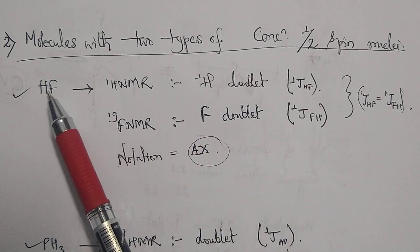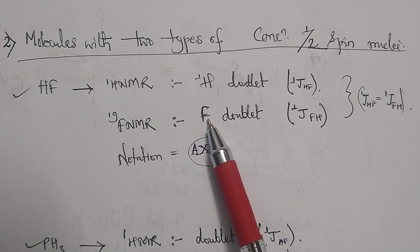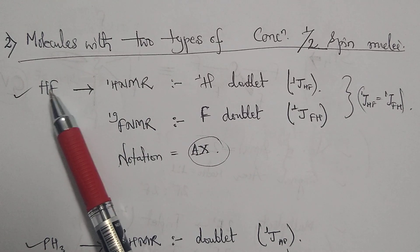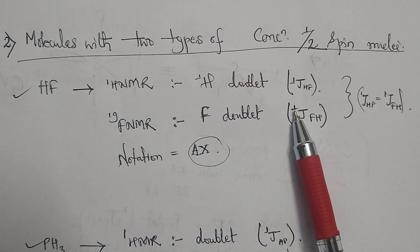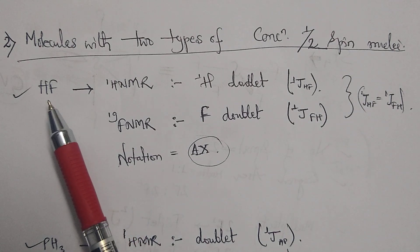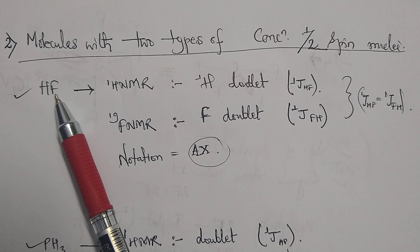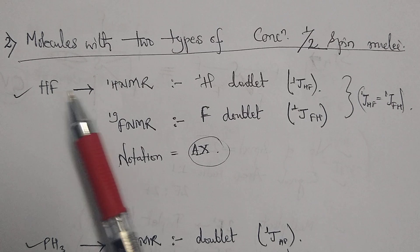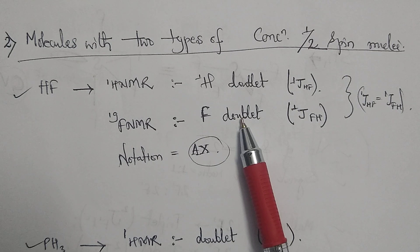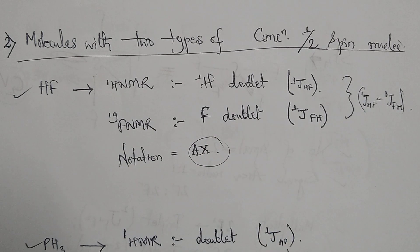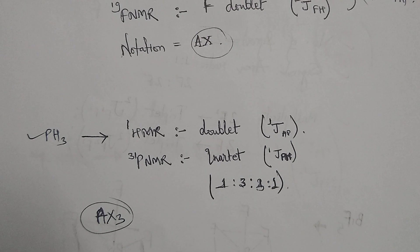Similarly, when we do the fluorine NMR, that is 19F NMR, we will get the doublet signal for the fluorine because it couples with the proton via one bond, due to the one-bond coupling constant 1JFH. We have two different kinds of spin here — proton and fluorine — so we get doublet signals for both, giving us the Pople notation AX system.